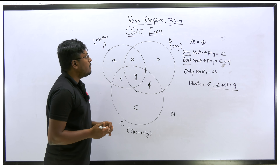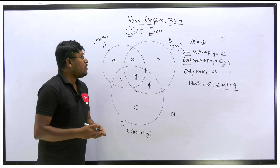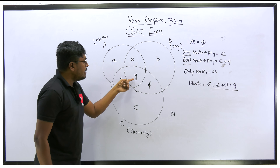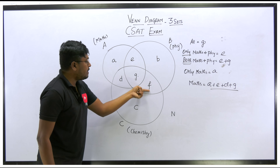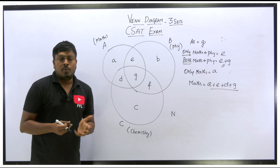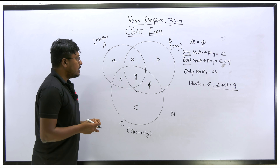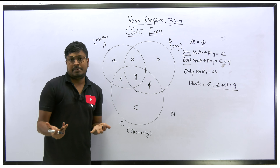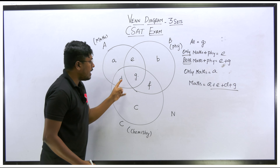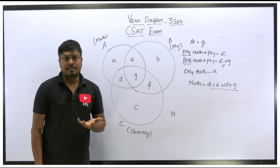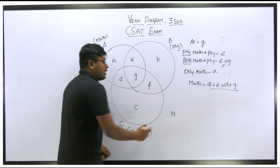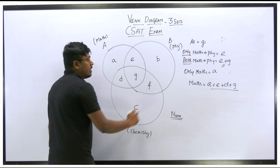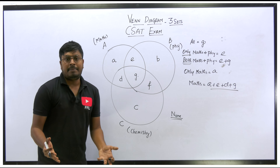Total physics is B + E + G + F. Only chemistry is C, and total chemistry is C + D + G + F. To find students not preparing any subject, add all values inside the sets and subtract from the total number of students. The resultant value is 'none' — students not preparing any subject.